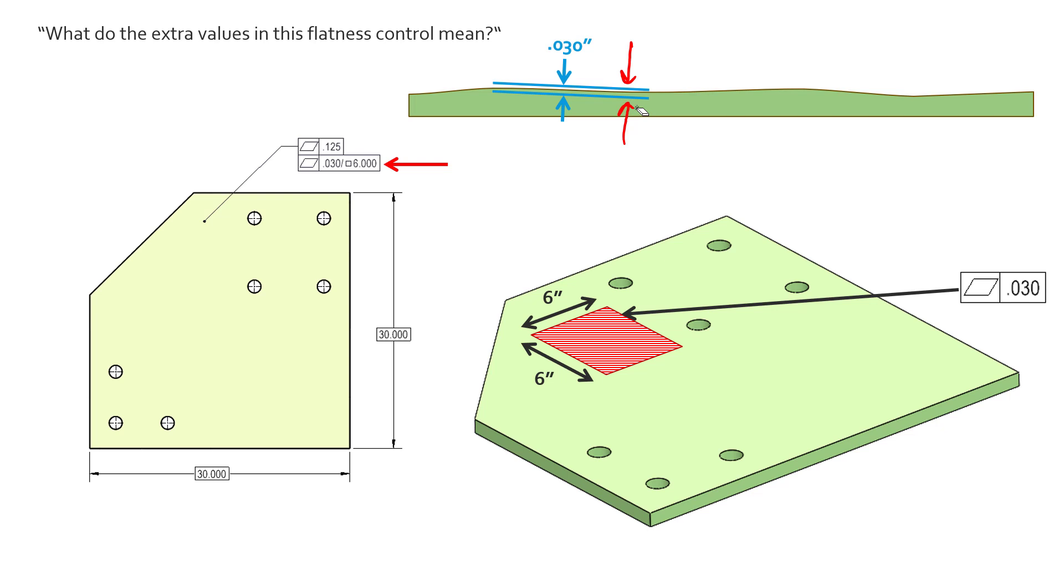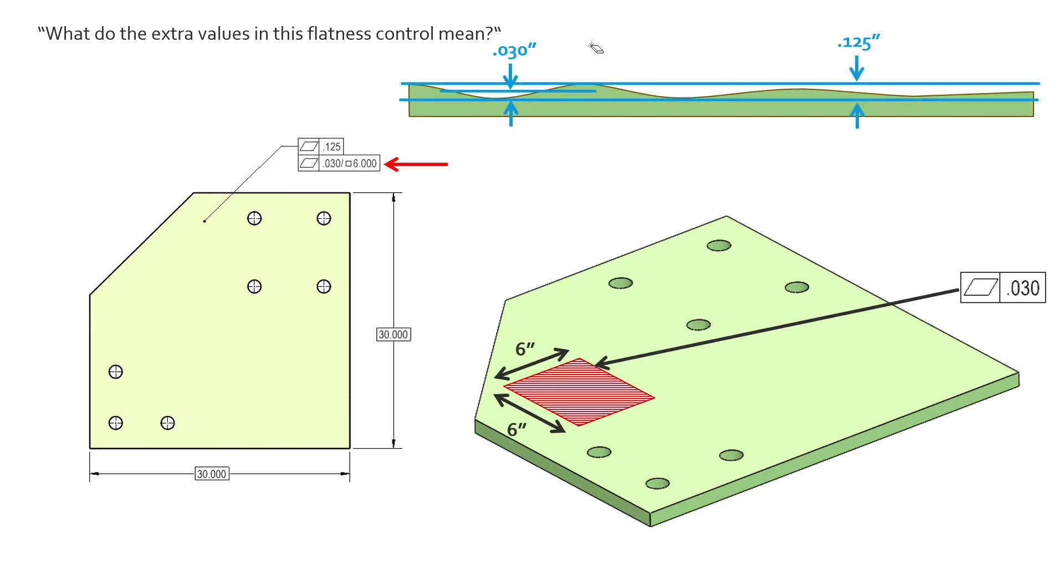We're controlling and making sure the elements of that surface don't deviate between 30 thousandths. What this is doing for us is really refining the rate of change.